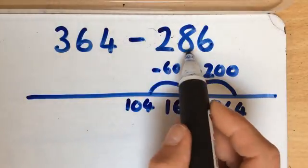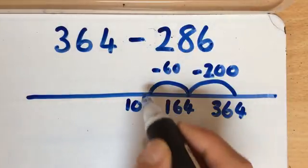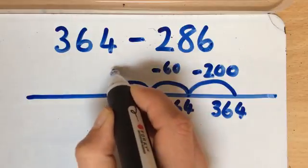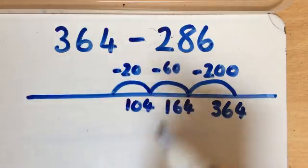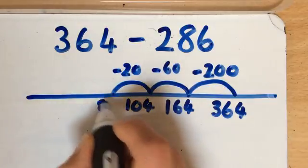I've only taken away 60. I need to take away 80. So that means I've got to take away another 20, and then that should give me 84.